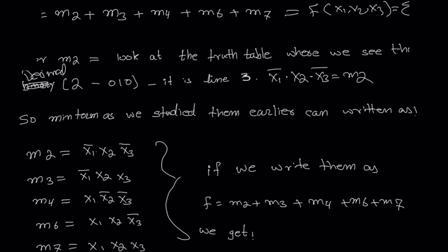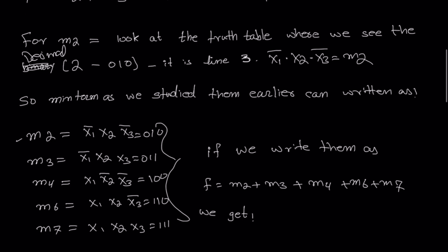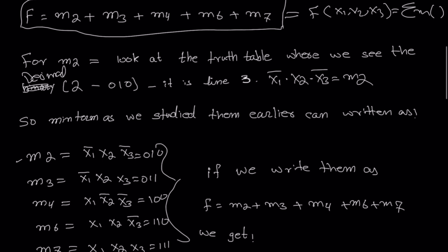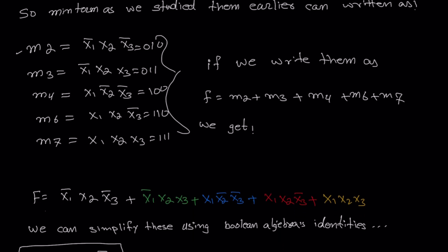Writing them all out: m2 is 0,1,0; m3 is 0,1,1; m4 is 1,0,0; m6 is 1,1,0; and m7 is 1,1,1. If you have knowledge of binary-to-decimal conversion, you can verify these. Now since we have all the min terms, we can write the full function f(x1,x2,x3) as the OR of m2, m3, m4, m6, and m7 and then simplify using Boolean algebra identities.